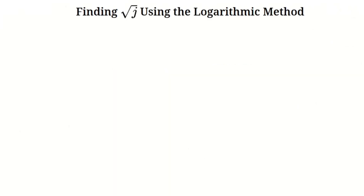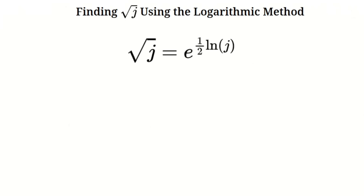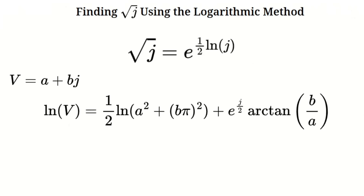Now let's verify this result using the logarithmic method. To compute the square root of j, we use the relationship between roots and logarithms: √j equals e raised to the power of (1/2)·ln(j). So our task is to find the logarithm of j in this virtual number system. In this system, the logarithm of a + b·j is given by (1/2)·ln(a² + b²·π²) plus j divided by π times arctan(b/a).